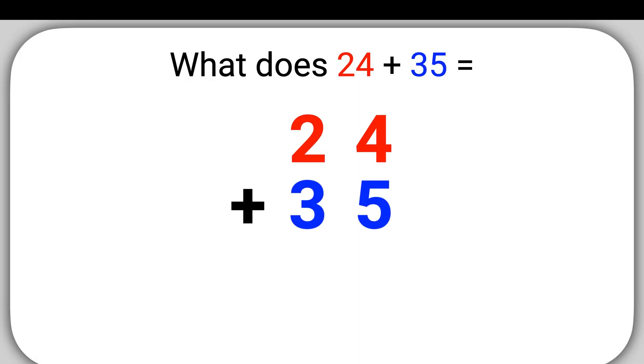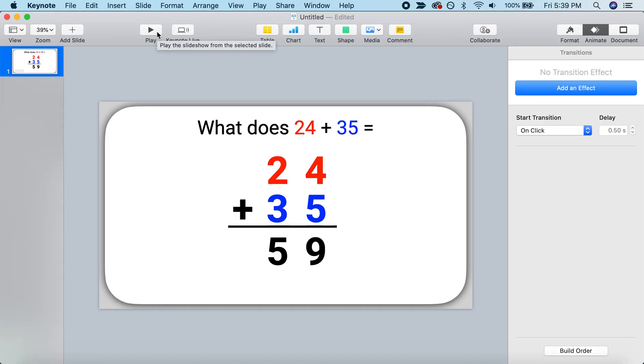24 plus 35 equals, well, 4 plus 5, that's 9. And 2 plus 3, that's 5. All right. That looks pretty good. We've walked students through this problem. And that's about all we need to do.